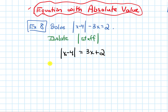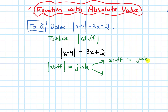Now remember, if I have the absolute value of something isolated and it equals some expression on the other side, I can split this up into two cases. I remove the absolute value, and either the stuff inside equals the expression on the right-hand side, or the stuff inside equals the negative of that expression.